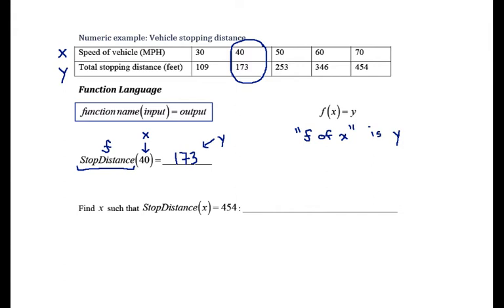This one's pretty easy to understand because we don't have any of the same numbers showing up as inputs and outputs, so even if we were just guessing wildly we would probably get it correct. It gets a little bit more important to understand the language well when we're working with an abstract function where the x values and the y values are largely the same numbers and the function itself doesn't necessarily have a meaning. So this is saying that the function stop distance with the input 40 gives us the output 173.